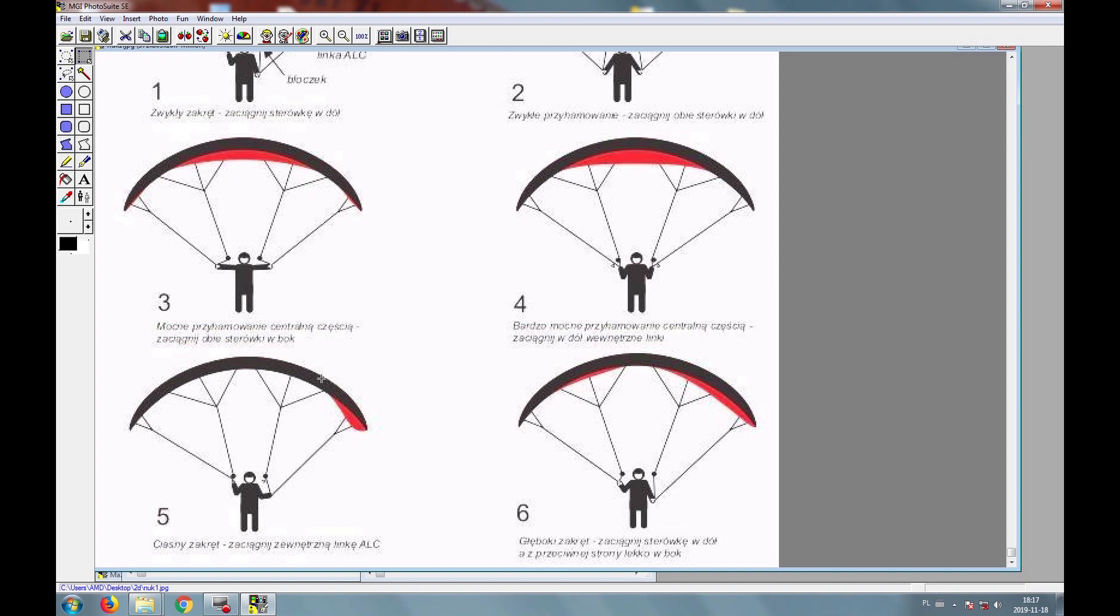We cannot pull the steering. Why? Because the trims are working on this part here, so on this part here we cannot use the steering. In the full trim position, if we pull the steering, the glider would stall and collapse. So we can only steer here on the very edges, on the stabilo. That's why we have an additional line that goes from the trailing edge of the stabilo to the pilot.